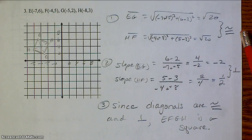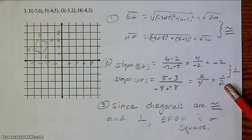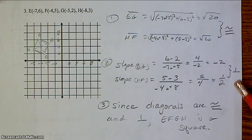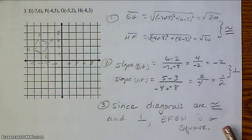Both the distances are congruent. Your slopes, negative 2 and positive 1 half, those would cause perpendicular diagonals. So, since the diagonals are both congruent and perpendicular, this would, in fact, be a square.